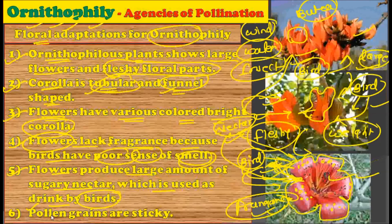The next adaptation shown by ornithophilous plants is that the pollen grains are sticky. All these pollen grains are sticky in nature. This makes sense because whenever a bird lands on these flowers, the pollen grains need to stick to the bird's body in order to be carried away to another flower. That is why these flowers show pollen grains which have a sticky nature.